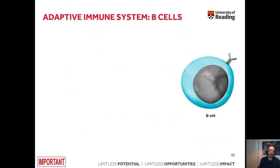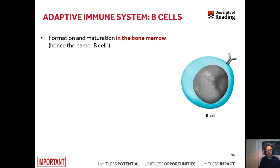So what are B cells? B cells are cells of the hematopoietic system — the blood system. They are white blood cells and they are formed and matured in the bone marrow, hence the name B cells.